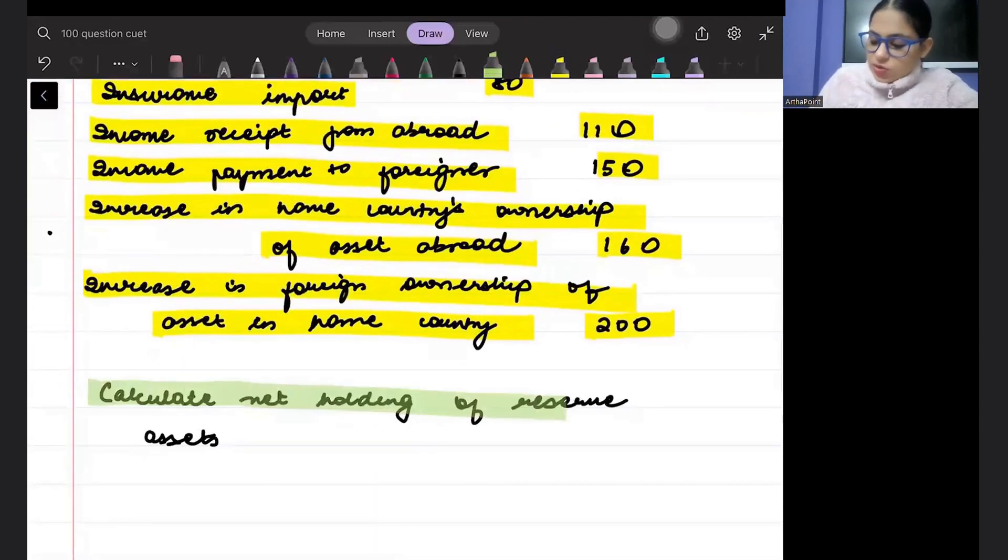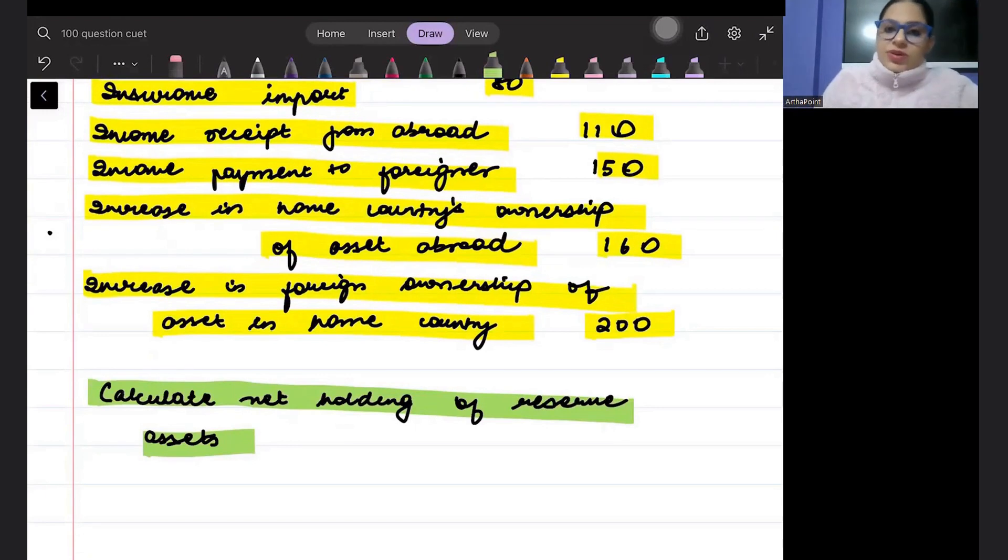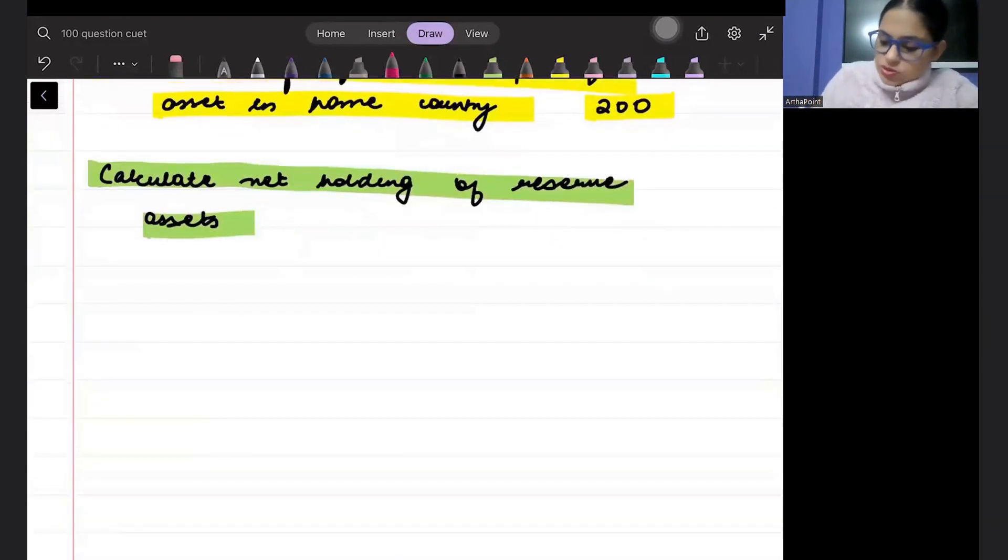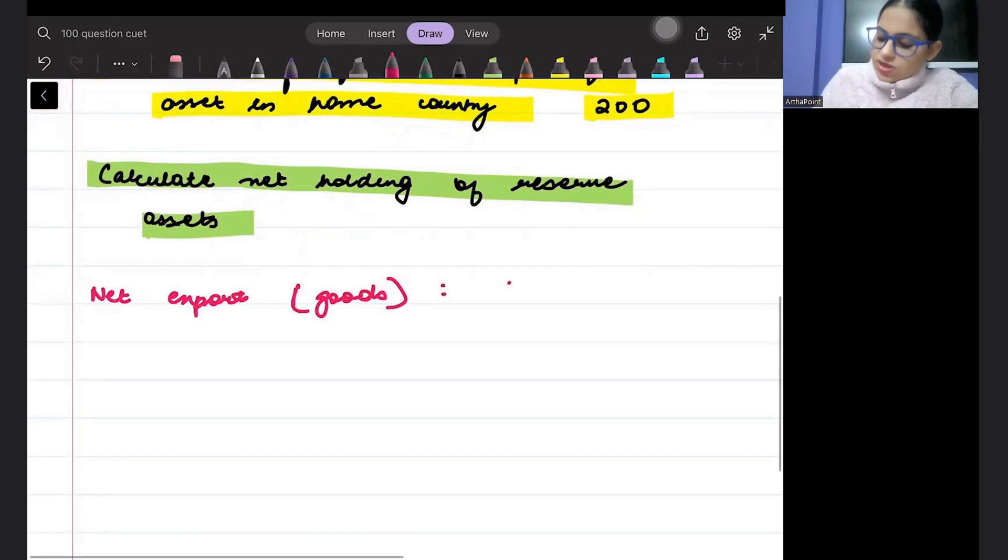Calculate net holding of reserve asset. Let's see, Peter, what is your net exports of goods? Goods ke net export ho gay, export minus import of goods.